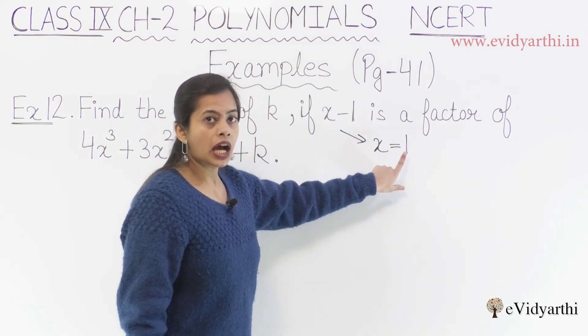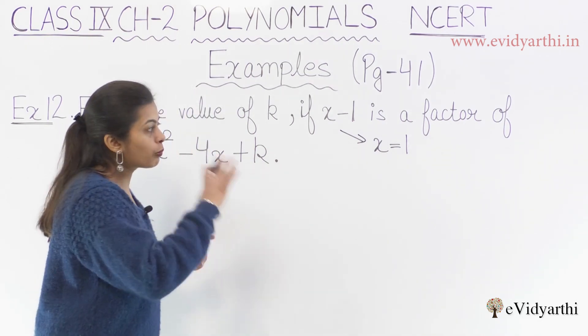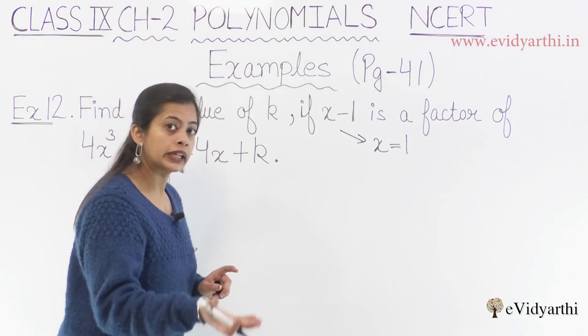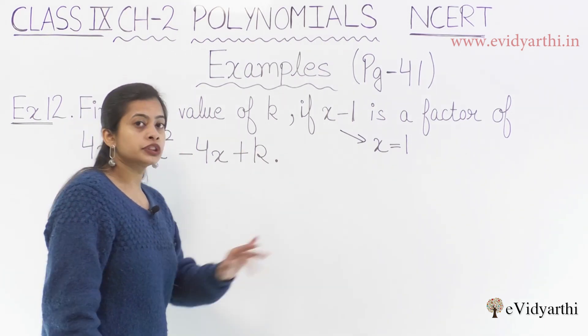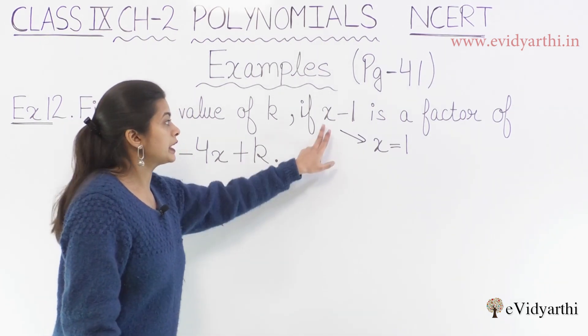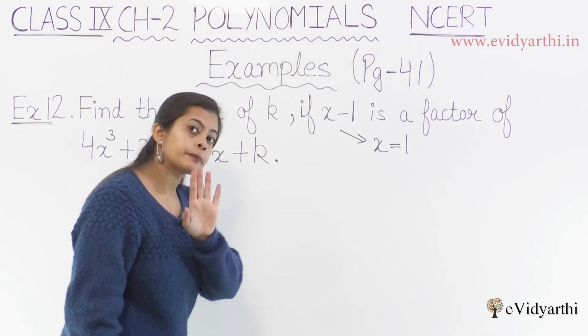so what will happen? If I write this value in our polynomial, then the whole polynomial will be equal to 0. Why? Because x-1 is a factor. That means the remainder is 0.